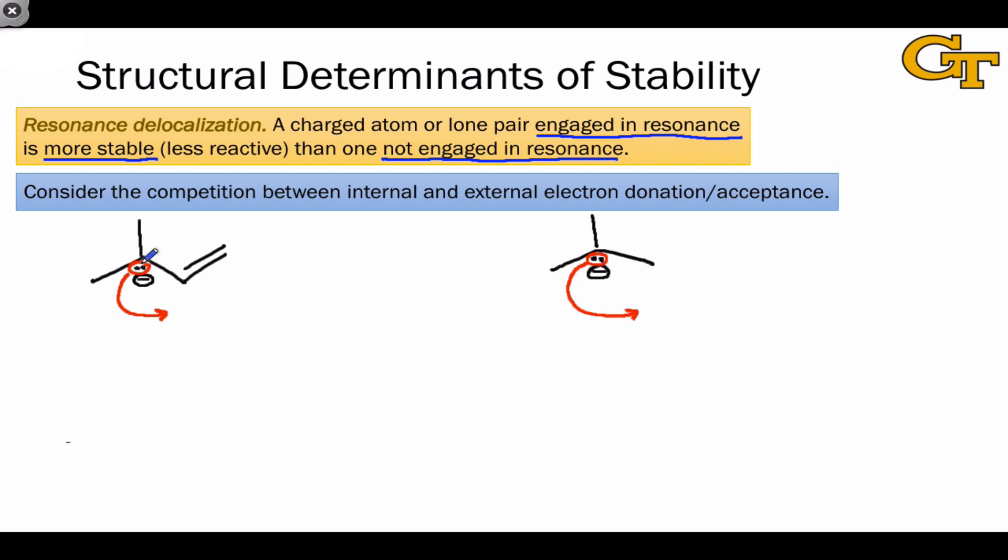However, that lone pair also participates in internal electron flow, that is, resonance. The curved arrows showing the conversion to the other important resonance form involve using that lone pair as an internal electron source. The importance of this internal electron flow to the structure of the delocalized anion makes the molecule less reactive than the localized structure in which that kind of internal electron flow is not possible.